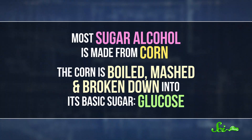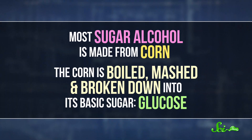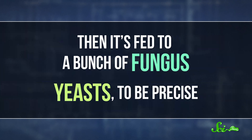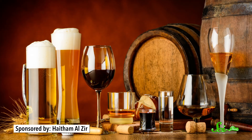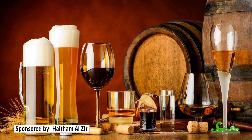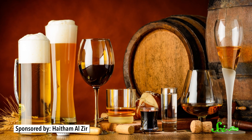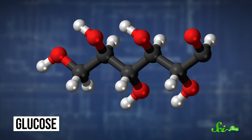So how do you take sugar and turn it into an alcohol, one that won't kill you? Well, most sugar alcohol, like erythritol for example, is made from corn. The corn is boiled, mashed, and broken down into its basic sugar, glucose, then it's fed to a bunch of fungus—yeasts, to be precise. Because sugar alcohol is the product of fermentation, just like the alcohol in beer or wine. Companies use certain kinds of yeast that turn glucose into sweet, non-toxic alcohols. These yeasts eat away at the glucose, breaking down those big, clunky sugar molecules into smaller, simpler molecules. What's left are molecules with four carbons, each of which is saturated and attached to a hydroxyl group. And there you have it—sugar alcohol.